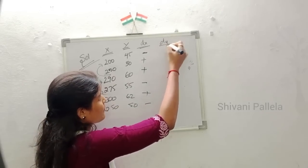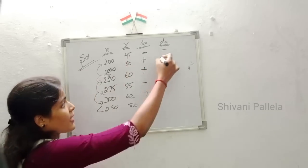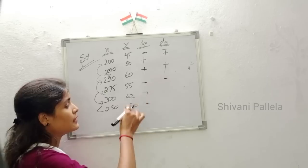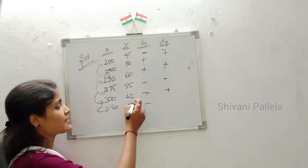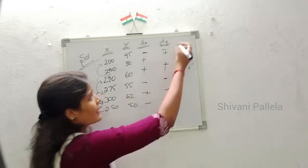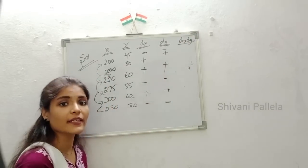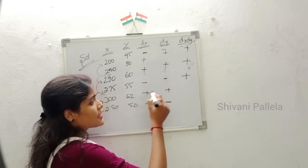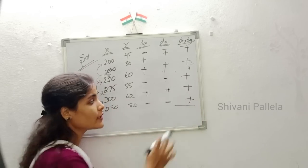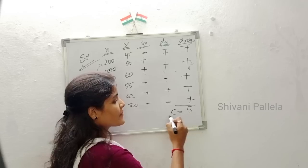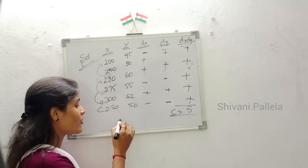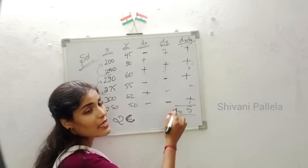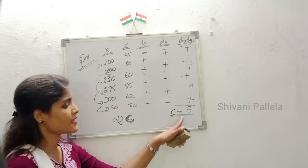Now for dy: first value is a hyphen. Then 50 is more than 45, so plus. 60 is more than 50, so plus. 55 is less than 60, so minus. 62 is more than 55, so plus. 50 is less than 62, so minus. Now calculate dx × dy: plus × plus = plus, plus × plus = plus, minus × minus = plus, plus × plus = plus, minus × minus = plus. We have 5 plus signs, so c = 5.